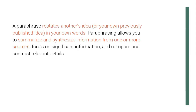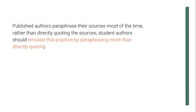A paraphrase restates another's idea — or your own previously published idea — in your own words. Paraphrasing allows you to summarize and synthesize information from one or more sources, focus on significant information, and compare and contrast relevant details. In paraphrasing, you have to reword the original text; in doing this, you may provide a summary or synthesis of the text. You can also condense into one paragraph the statements or passages of various authors — this is what we call synthesis. Published authors paraphrase their sources most of the time rather than directly quoting them, and student authors should emulate this practice by paraphrasing more than directly quoting. But still, you have to cite the other authors properly.